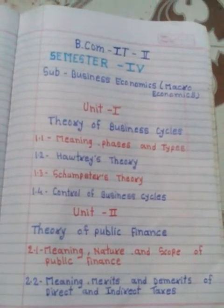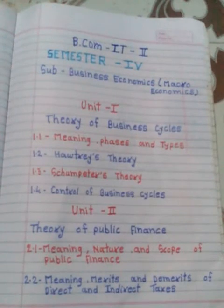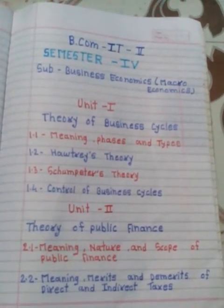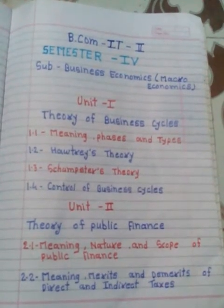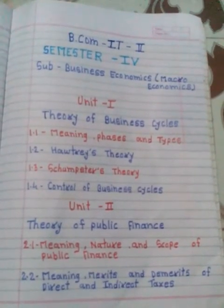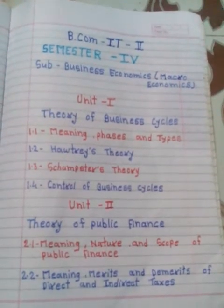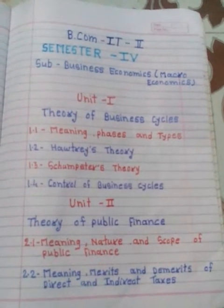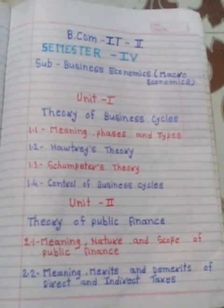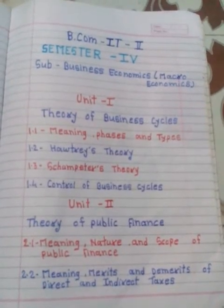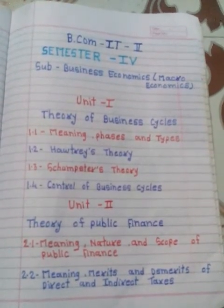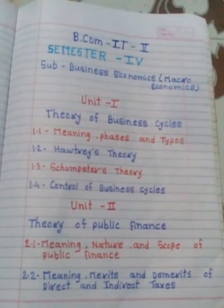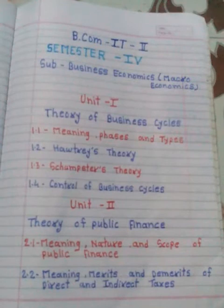The second unit is Public Finance. It covers the meaning, nature, and scope of public finance. Public finance is related to the economy — specifically to the expenditures of the government, taxes of the government, and debt of the government. How the government earns money from society and how it spends money on society — that is discussed in public finance.